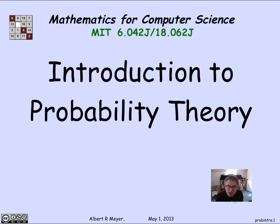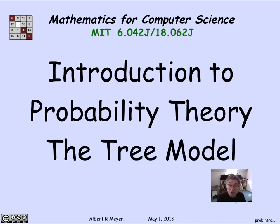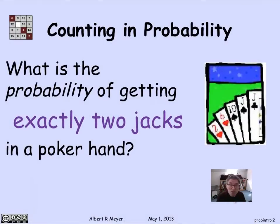But true to the historical basis, let's begin with an example from gambling that illustrates the first idea of probability. We're going to be working up to a methodology for inventing probability models called the tree model. So let's begin with an example from poker.